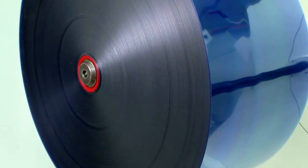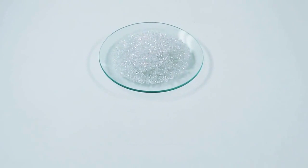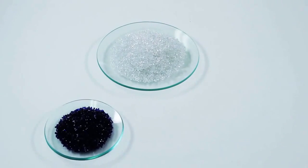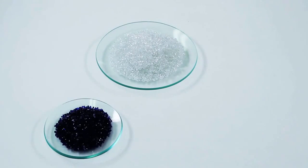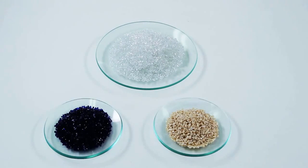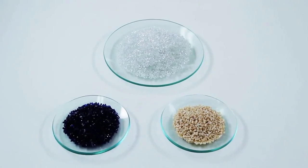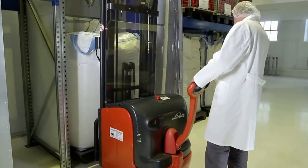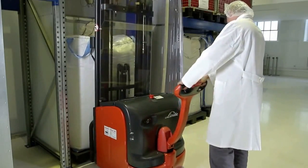PETG film consists of PETG granulate, a pigment for colored films, and an anti-blocking agent so that the film does not stick together. The manufacturing process starts with the delivery of the raw material.